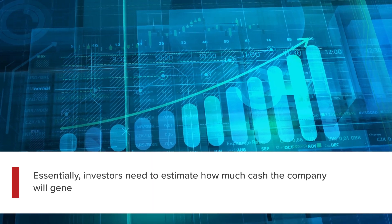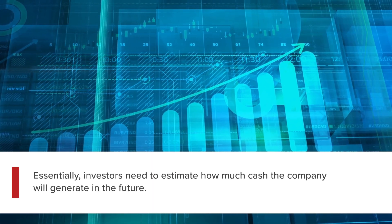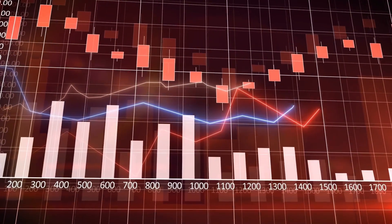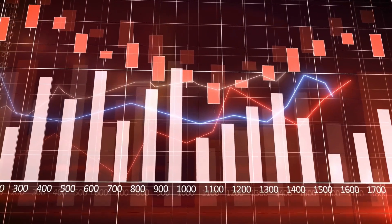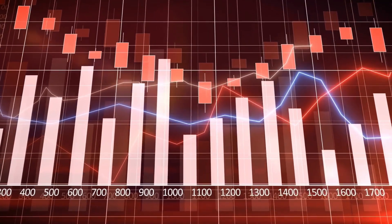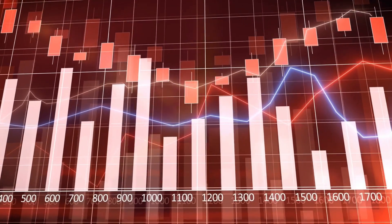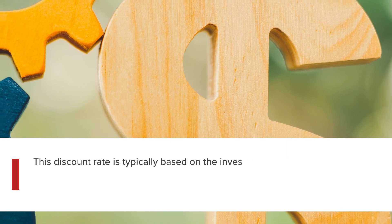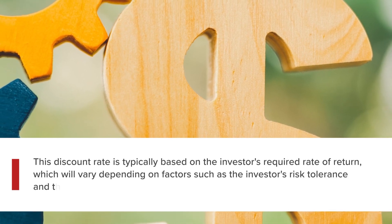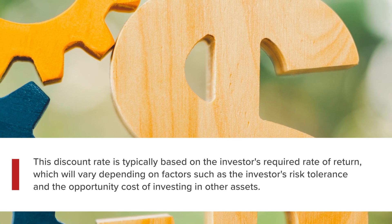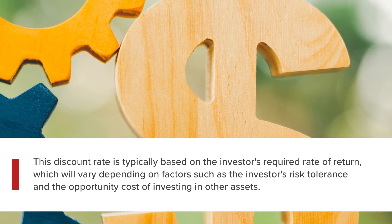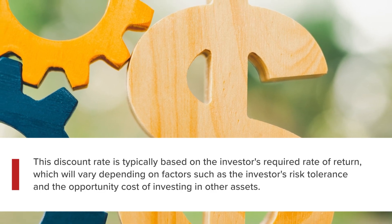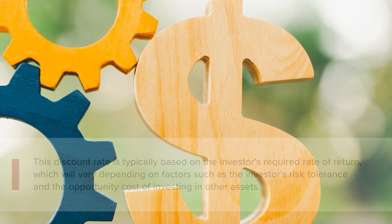Essentially, investors need to estimate how much cash the company will generate in the future. Once future cash flows have been estimated, they are discounted back to the present value using a discount rate that reflects the time value of money and the risk associated with the investment. This discount rate is typically based on the investor's required rate of return, which will vary depending on factors such as the investor's risk tolerance and the opportunity cost of investing in other assets.